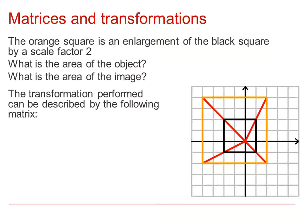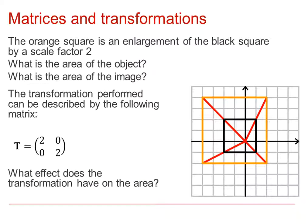The transformation involved in this situation is represented by the matrix T equals 2, 0, 0, 2. So the area has gone from 9 up to 36, and if we look at the determinant of T we can see that its determinant is 4. What we are investigating is the relationship between the determinant of the transforming matrix and the area scale factor involved in the transformation.